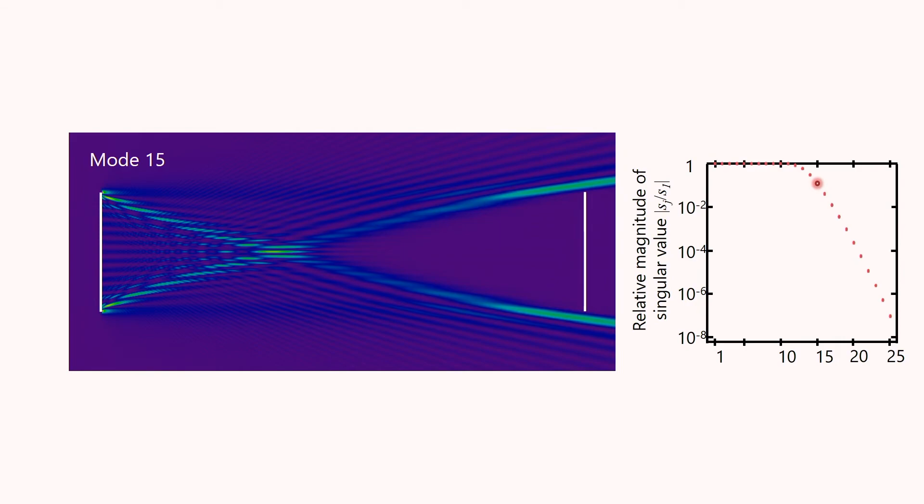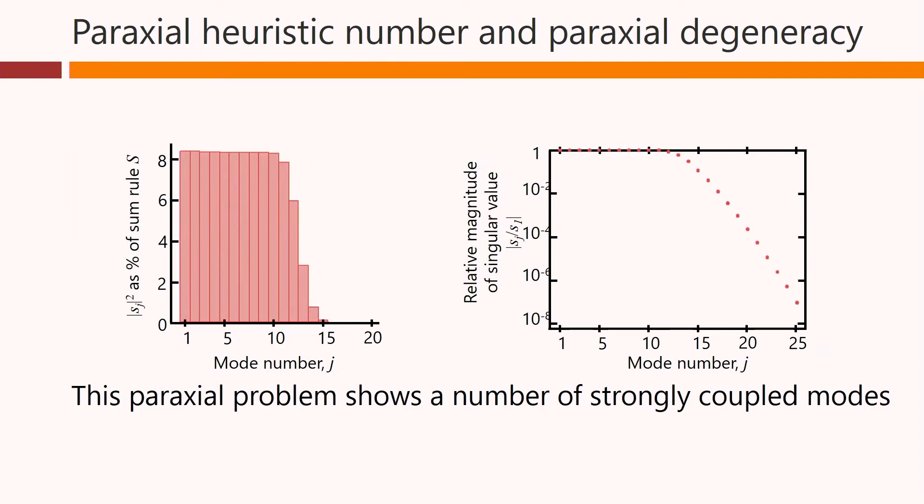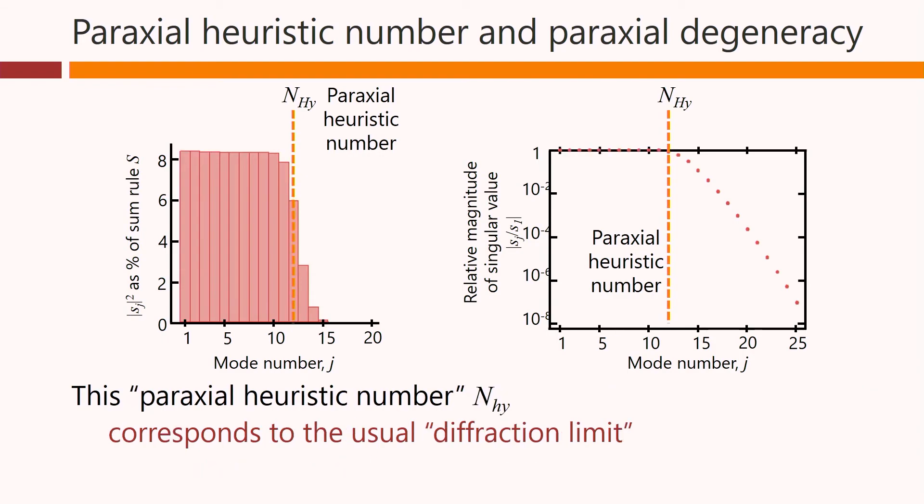And if we go to mode 15, we see the coupling is very weak. And we can look at that on a logarithmic scale as well. It does exist, but we see it's mostly, on this figure here, missing the receivers. It's not totally missing the receivers. There's still a very small amplitude in the middle here that we can't see on this scale. And if we go up to higher mode, we see the coupling strength falling off exponentially fast. This paraxial problem, then, does show a number of strongly coupled modes that are all approximately equally strongly coupled, and up to what we could call a paraxial heuristic number, n_hy here. It's about 12 in this case. This paraxial heuristic number corresponds to our usual ideas of a diffraction limit, by the way. And we can call this approximate equality of the coupling strengths, paraxial degeneracy.